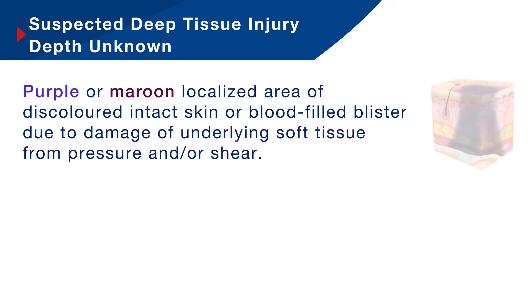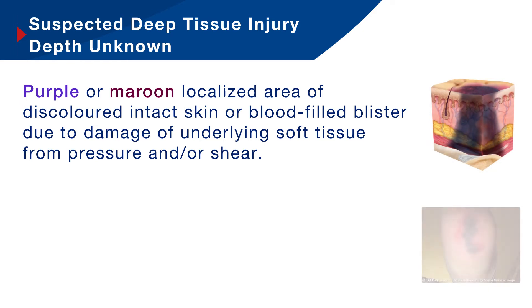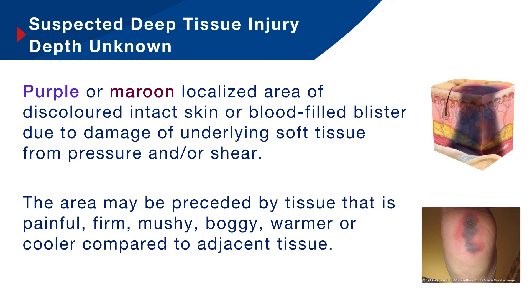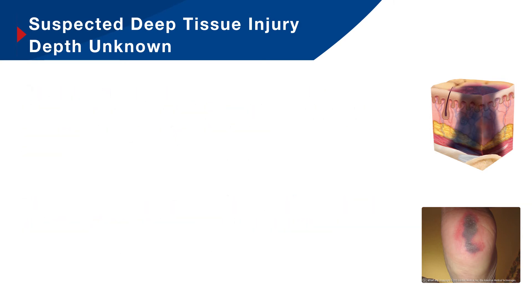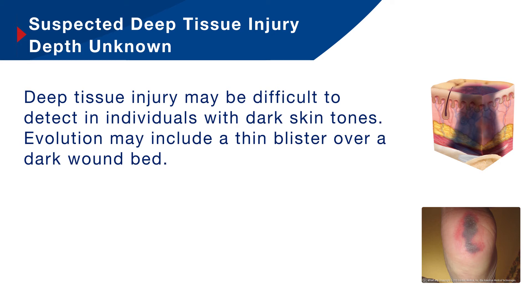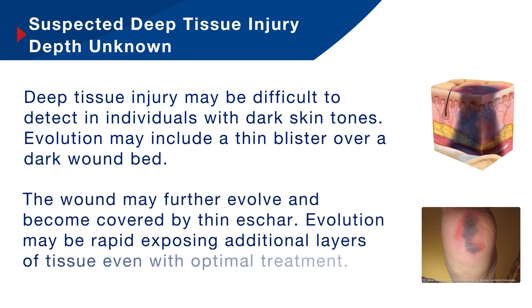And then lastly, suspected deep tissue injury — again, this is where depth is unknown. It presents as a purple or maroon localised area of discoloured intact skin or blood-filled blister due to damage of underlying soft tissue from pressure and/or shear. The area may be preceded by tissue that is painful, firm, mushy, boggy, warmer or cooler as compared to adjacent tissue. Deep tissue injury may be difficult to detect in individuals with dark skin tones, and evolution may include a thin blister over a dark wound bed. The wound may further evolve and become covered by thin escar, and evolution may be rapid, exposing additional layers of tissue even with optimal treatment in place.